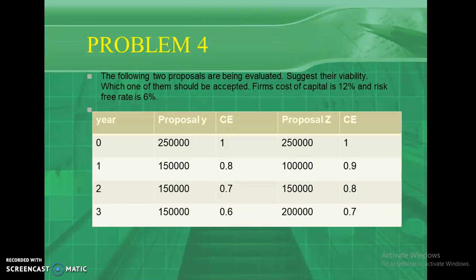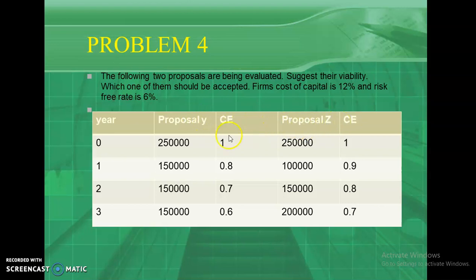Let us look into the following two proposals being evaluated for their viability — which one of them should be accepted. The firm's cost of capital is 12% and the risk-free rate is 6%. Two proposals, Y and Z, are given along with their cash flows and certainty equivalents, and based on this we want to evaluate which proposal will be accepted.